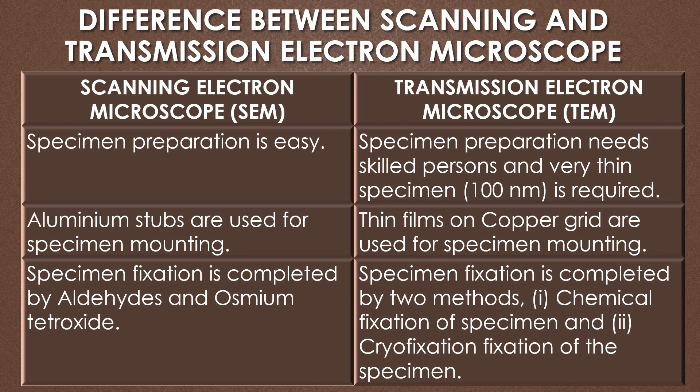Specimen preparation is easy for the SEM, but for the TEM it requires a skilled person and a very thin specimen — the specimen thickness should be 100 nanometers or below. In the SEM, aluminum strips are used for specimen mounting, while in the TEM, thin films on a copper grid are used. In the SEM, specimen fixation is completed by aldehydes and osmium tetraoxide. In the TEM, specimen fixation is completed by two methods: chemical fixation and cryo-fixation.